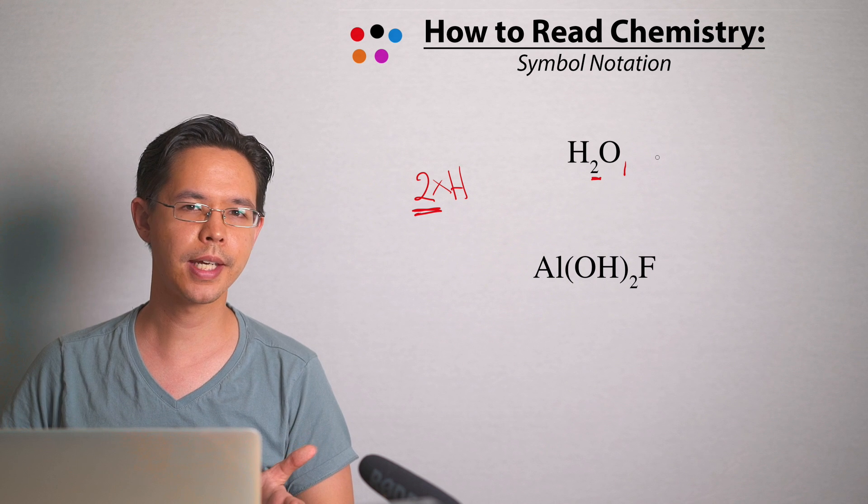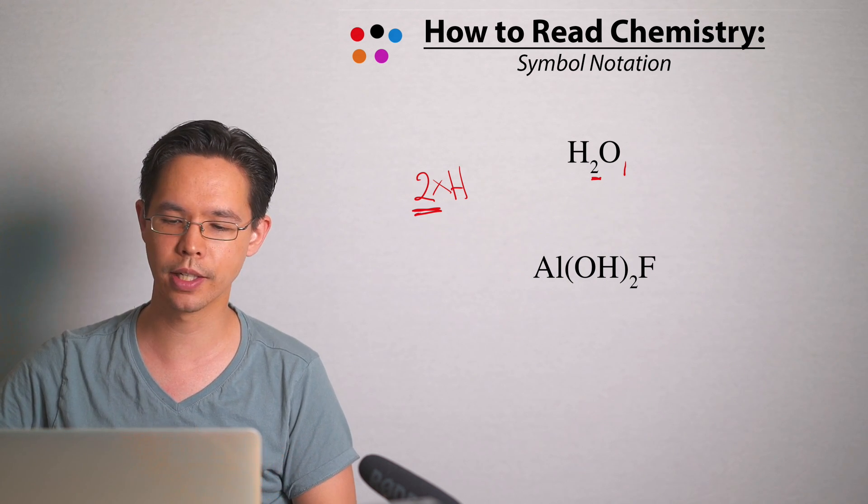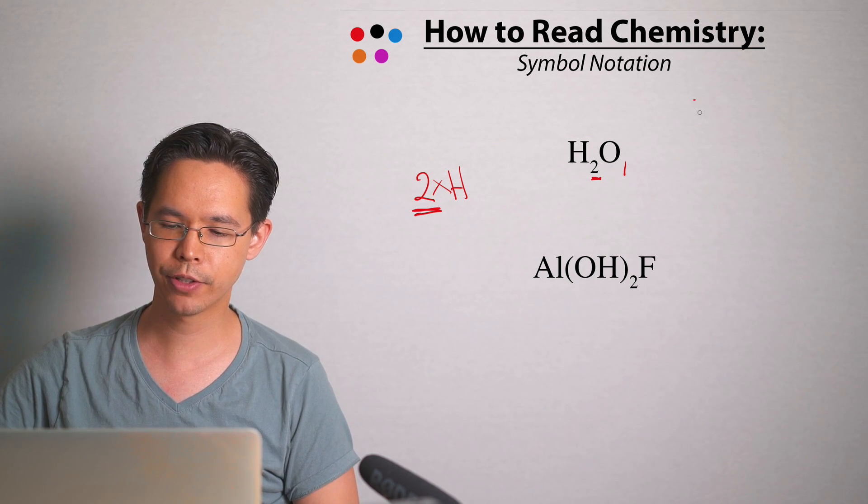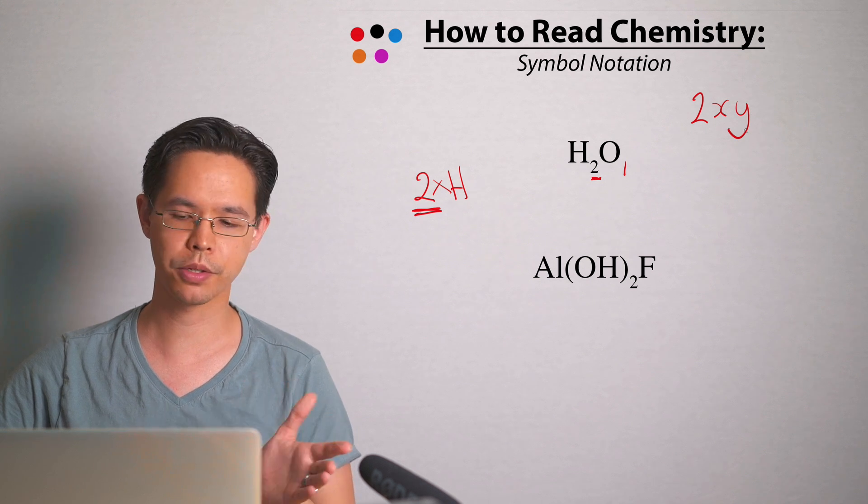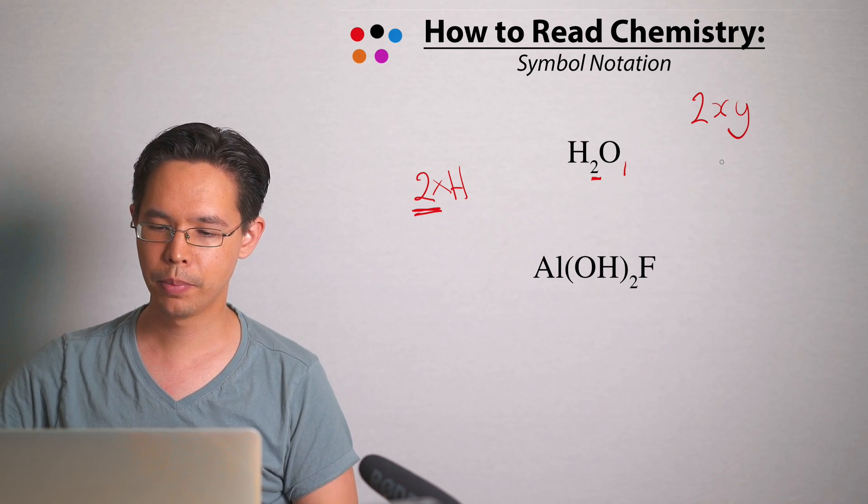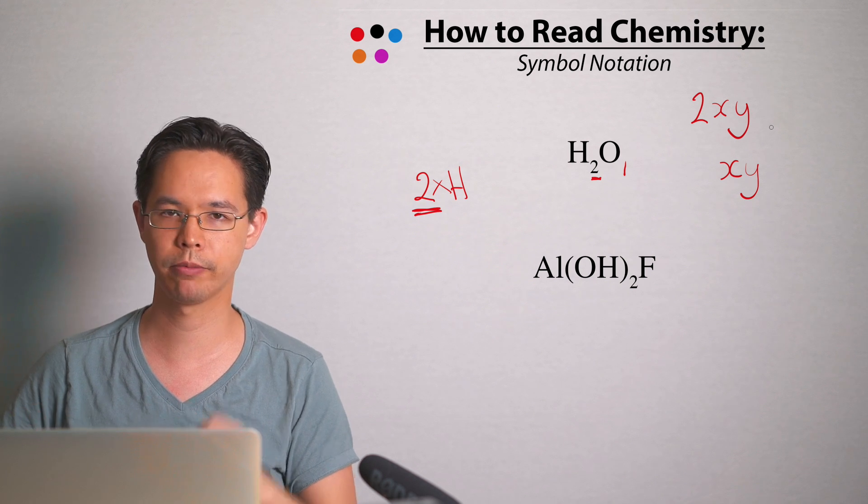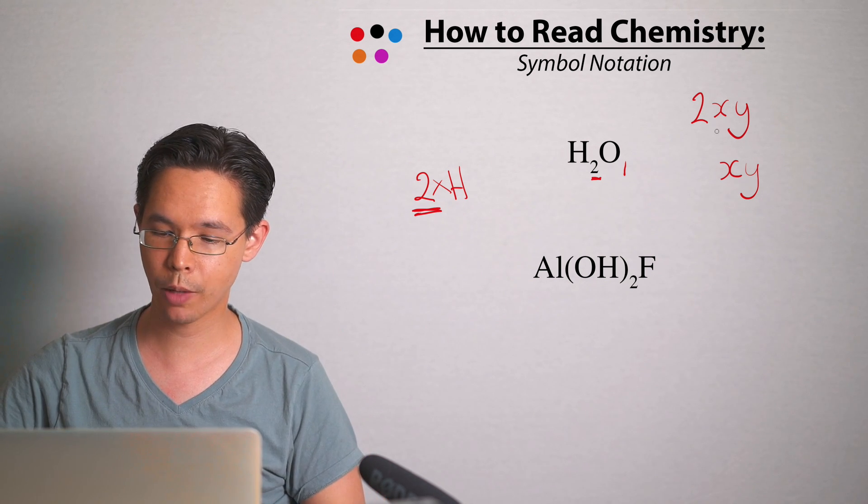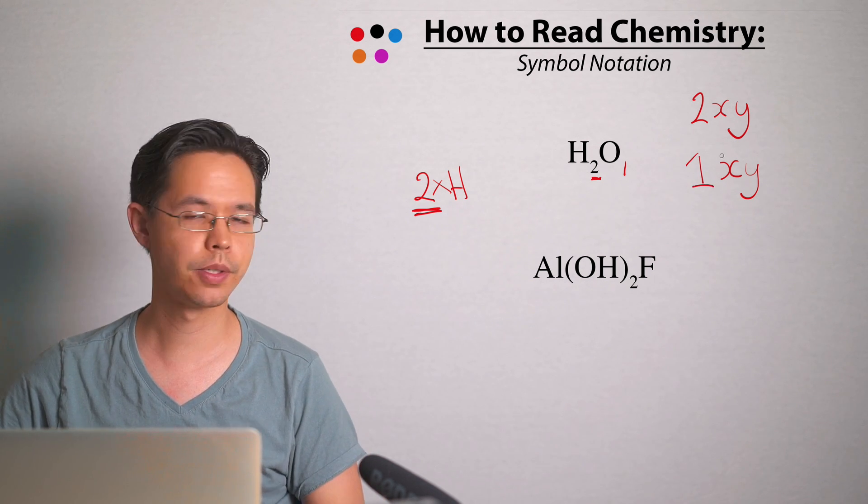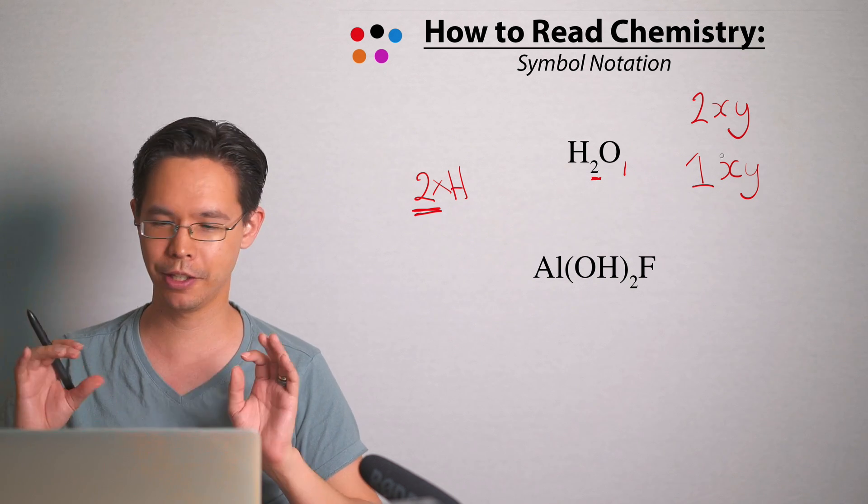We do the same sort of cheat in mathematics. If you've got something called like 2xy, you know it's double xy. But if I just write xy and I ask you how many xy's are there, you say one. That's because that one is invisible. Same deal happens in chemistry.